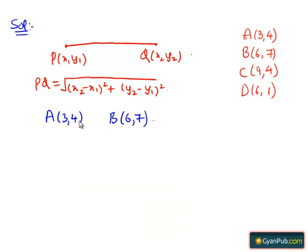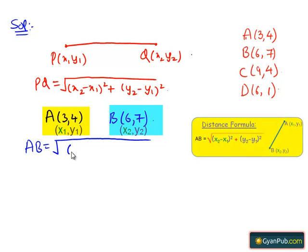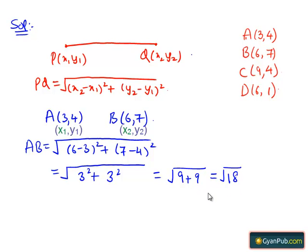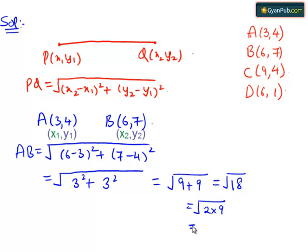Applying the distance formula to points A(3, 4) and B(6, 7), we get AB = √((6−3)² + (7−4)²) = √(3² + 3²) = √(9 + 9) = √18. On further simplification, we can write 18 as 2 × 9, so √18 = √2 × 3 = 3√2.